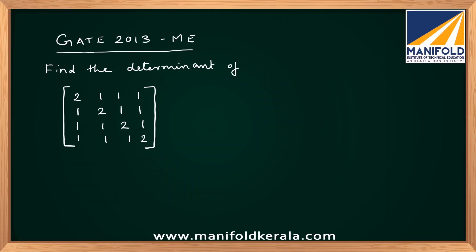We have a question from Gate2013ME. Find the determinant of a 4 by 4 matrix. The matrix is given to be 2 1 1 1, 1 2 1 1, 1 1 2 1, and 1 1 1 2.